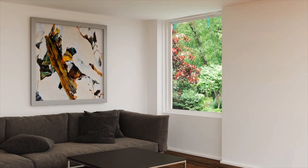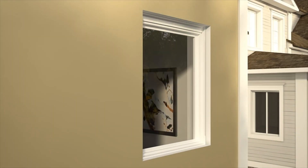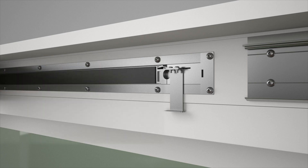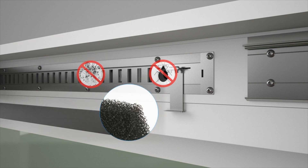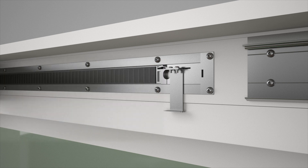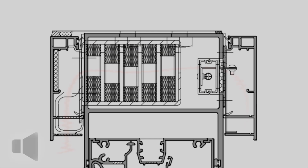With its concealed design, the AWS Trickle Vent is an integrated part of the window system and easy to specify as part of a high performance glazing solution. It is accessible for maintenance, filters airborne dust and pollutants, and can be fitted with sound absorption material to further reduce noise.